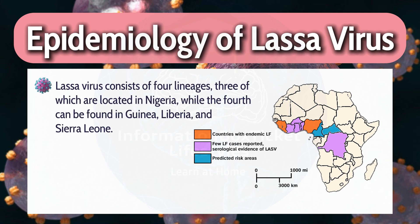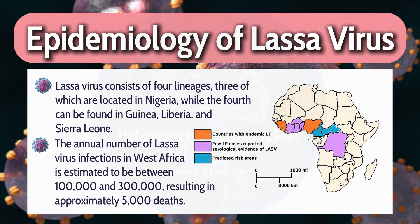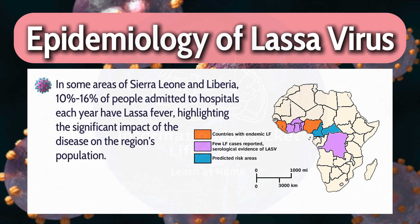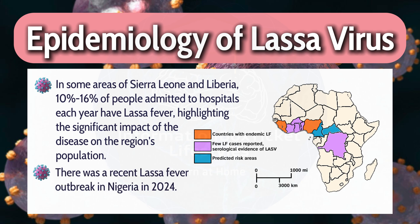Lassa virus consists of four lineages, three of which are located in Nigeria, while the fourth can be found in Guinea, Liberia, and Sierra Leone. The annual number of Lassa virus infections in West Africa is estimated to be between 100,000 and 300,000, resulting in approximately 5,000 deaths. In some areas of Sierra Leone and Liberia, 10–16% of people admitted to hospitals each year have Lassa fever, highlighting the significant impact of the disease. There was a recent Lassa fever outbreak in Nigeria in 2024.